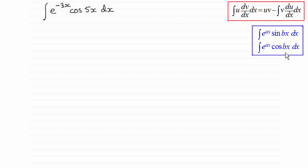If not, do go back and check it out. And I've got an example, a follow-up example here that you might like to try. It's the integral of e to the minus 3x cos 5x integrated with respect to x.